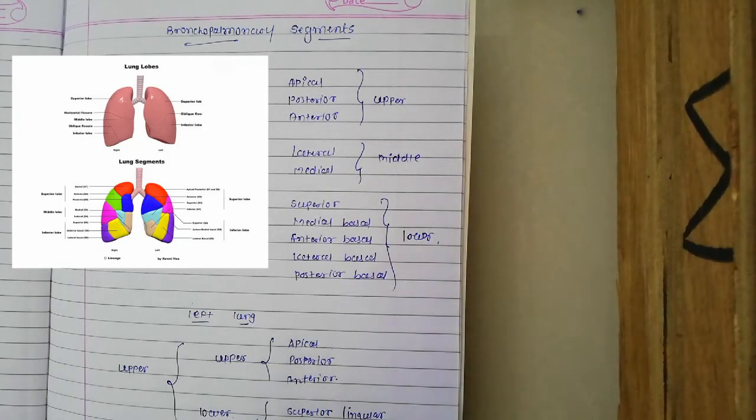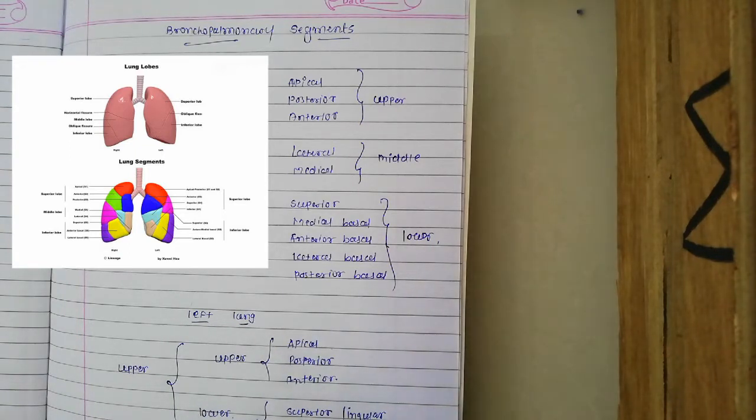Bronchopulmonary segments are the most widely accepted classification of lung segments. There are 10 bronchopulmonary segments on the right side and 10 on the left side. They are functional, anatomical, and surgical sectors.